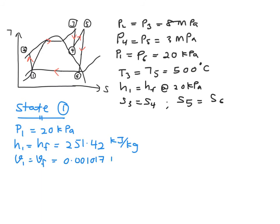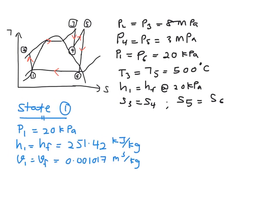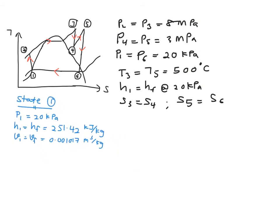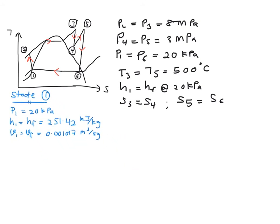All right. So now let us proceed with your state 2. In state 2, you have your P2 which is equal to 8 MPa. And recall back from your notes, we can make use of your work pump in order to find your H2.